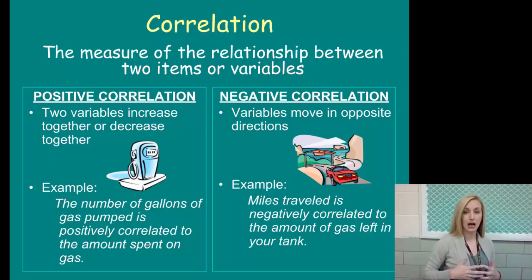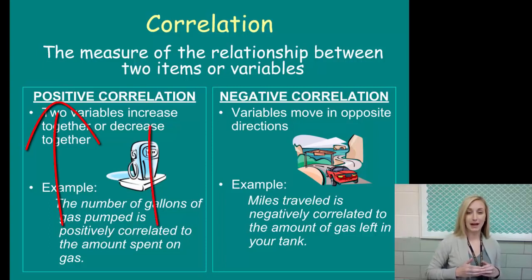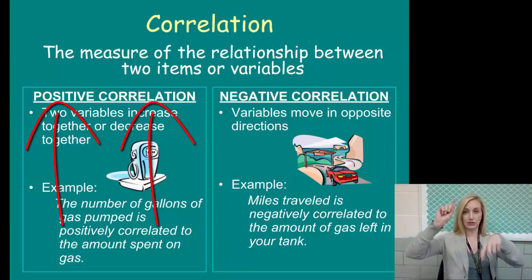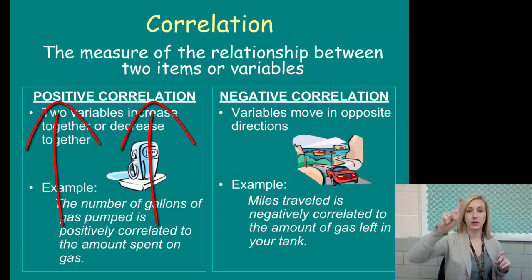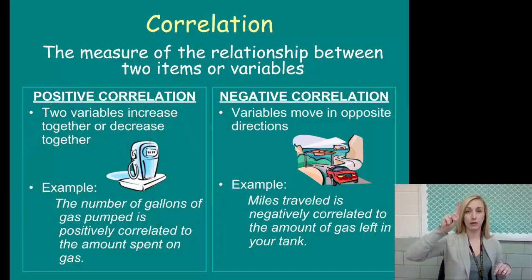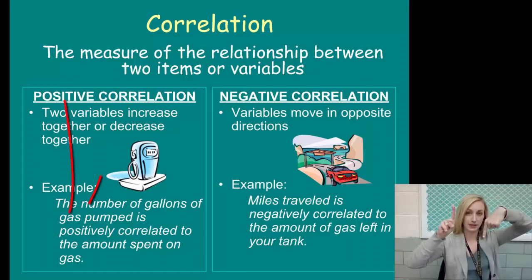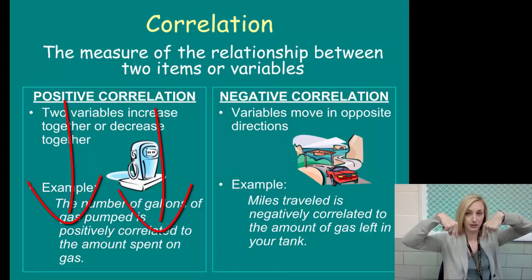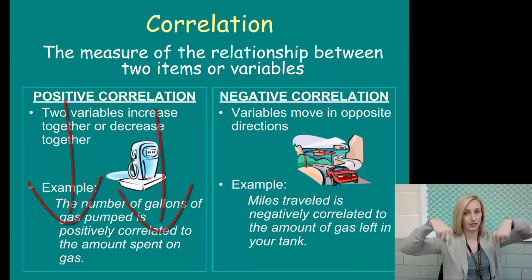Let me give you an example of a positive correlation. The number of gallons of gas pumped is positively correlated to the amount spent on gas. I'm going to use my hands and fingers here, and I think you should as well. So the number of gallons of gas pumped is positively correlated to the amount spent on gas. The more you pump, the more you spend. Just like the less you spend on gas, the less you have pumped.